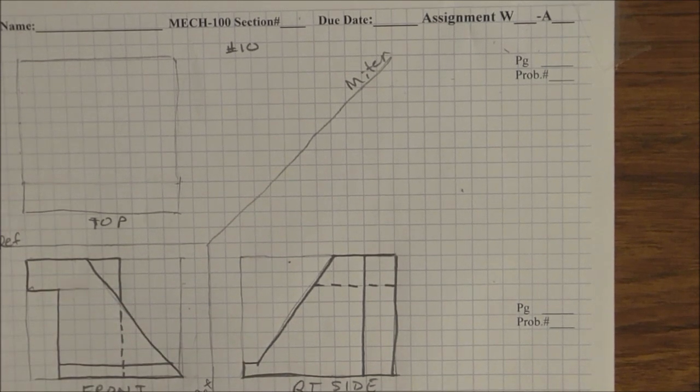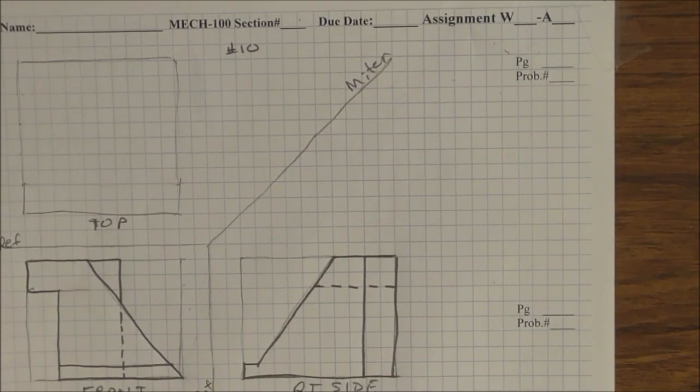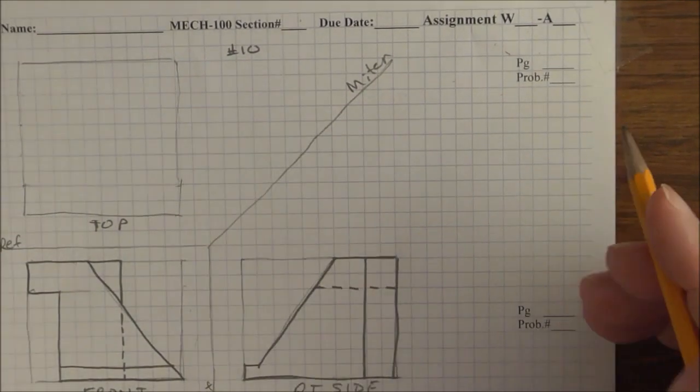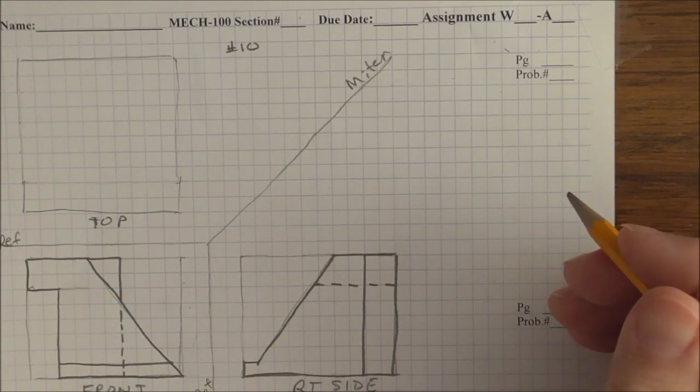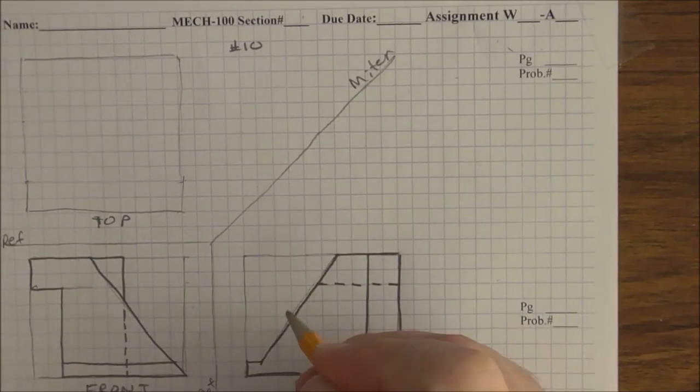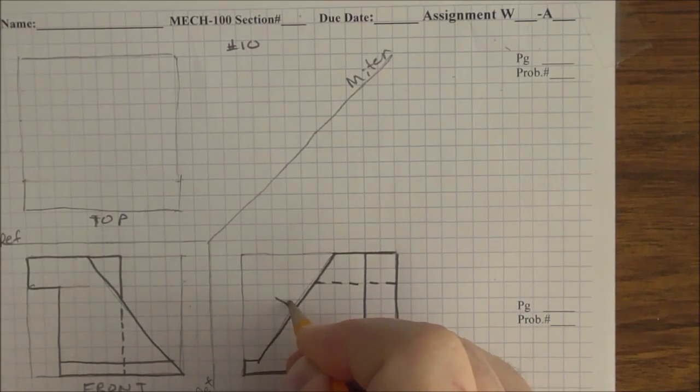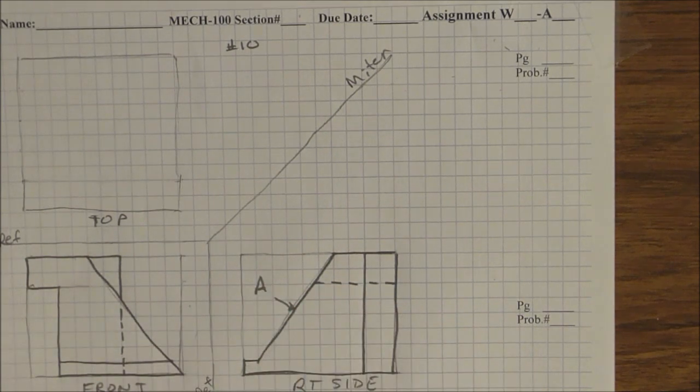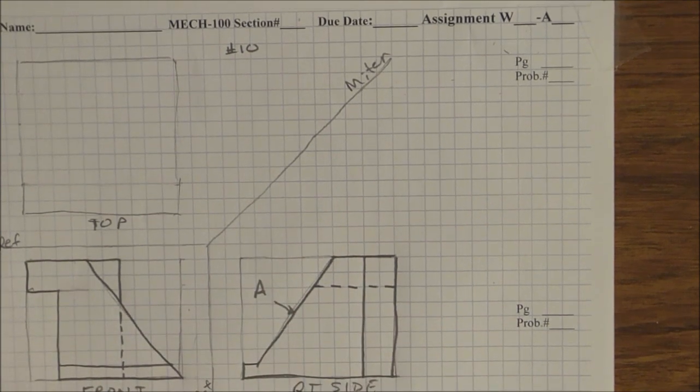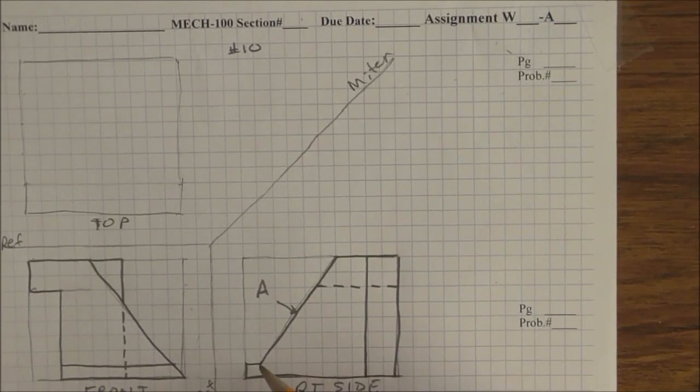So we start with the easy ones, which is the inclined planes. This does not take your imagination so much as just following a recipe called the numbering technique. So we're going to pick a plane in edge view. Edge view of a plane looks like a diagonal line. We label it A. We then find it immediately in the other view.